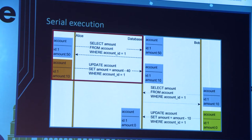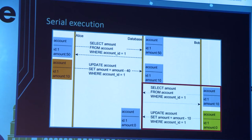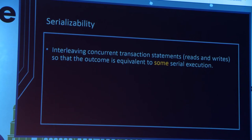With serial execution, Alice has exclusive access: she does all the reads, all the writes, then Bob comes, does his reads and writes. That's serial execution. However, databases don't work like that — you have multiple connections operating at the same time with multiple users, and every user can do whatever they want, so you need a way to control that.